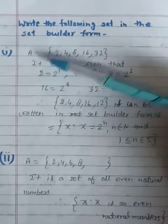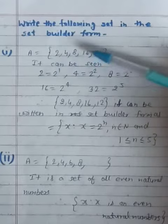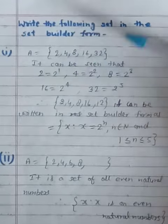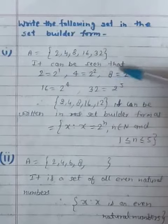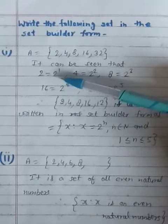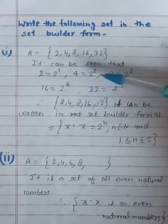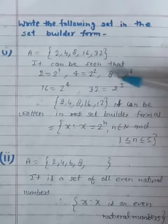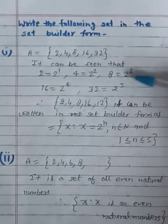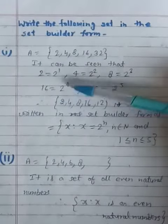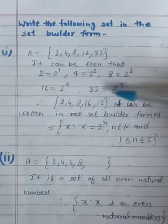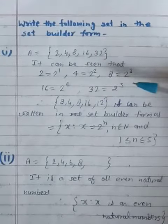First, A is equal to 2, 4, 8, 16, 32. It can be seen that 2 is equal to 2 to the power 1, 4 is equal to 2 to the power 2, 8 is equal to 2 to the power 3, 16 is equal to 2 to the power 4, and 32 is equal to 2 to the power 5.